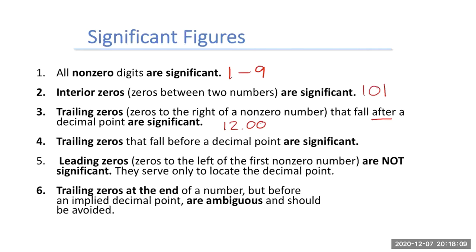Trailing zeros that fall before a decimal point are also significant. So if we had 100 with a decimal point, those two zeros count as significant figures. Now, leading zeros are not significant — they're only there as a placeholder. An example would be 0.0012; those three zeros in front are not significant, they're just placeholders. We can always rewrite this in scientific notation to get rid of those placeholders. Any trailing zero at the end of a number where we don't write a decimal point — these zeros are generally ambiguous and we should avoid writing them in our chemistry calculations.